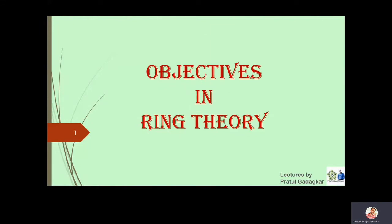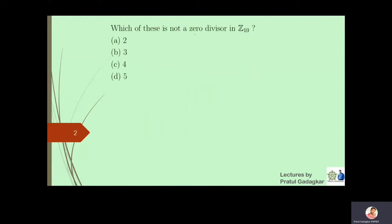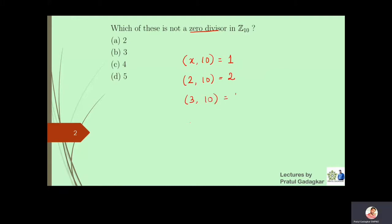In this video we are going to discuss some more objectives. The first objective is to check which of these elements is not a zero divisor of Z10. We know that an element which is relatively prime with 10 will become a unit. Here we see that 2 and 10 have GCD 2, 3 and 10 have GCD 1, 4 and 10 have GCD 2, and 5 and 10 have GCD 5.